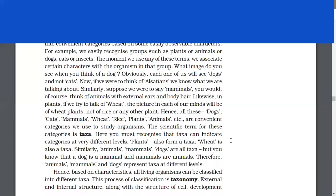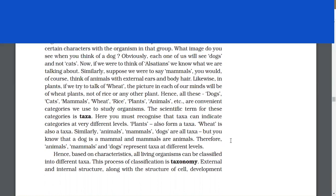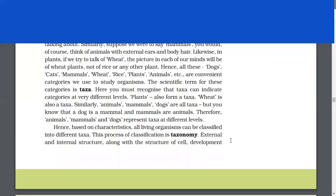Here, you must recognize that taxa can indicate categories at very different levels. Plants also form a taxon. Wheat is also a taxon. Similarly, animals, mammals, and dogs are all taxa. But you know that a dog is a mammal and mammals are animals. Therefore, animals, mammals, and dogs represent taxa at different levels. Based on characteristics, all living organisms can be classified into different taxa. This process of classification is taxonomy.